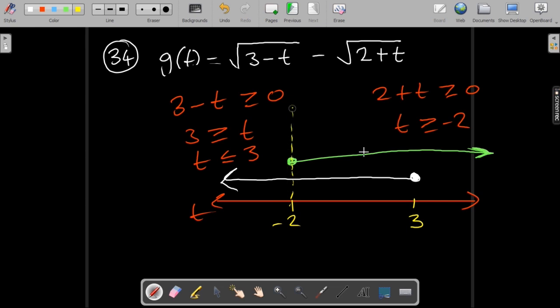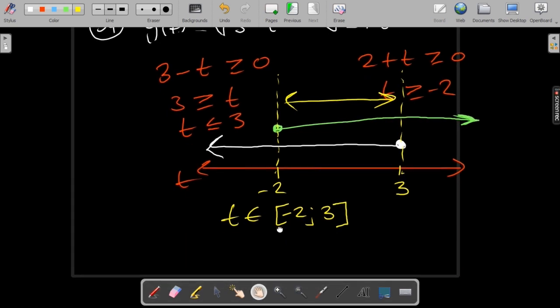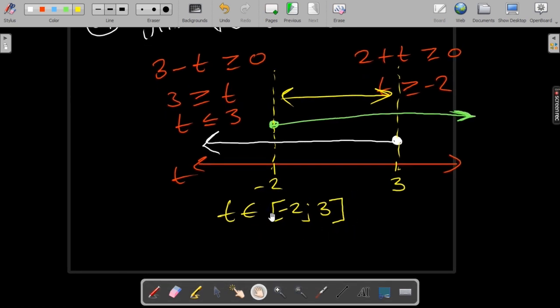So they overlap there and there. Anywhere between these two dotted lines both of the functions are defined which means that the whole function will be defined. So your final answer is now t is an element of minus 2 to 3 included. We're including or we have these square brackets because we have that equality over there.